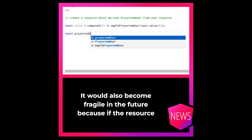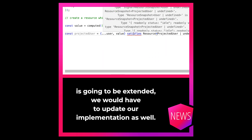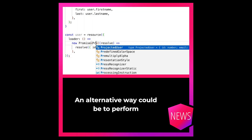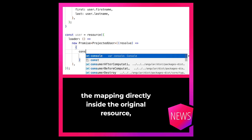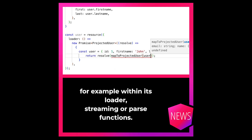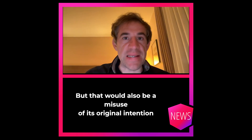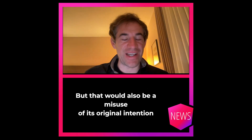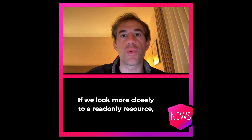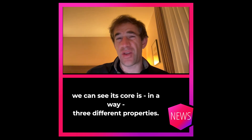It would also become fragile in the future because if the resource is going to be extended we would have to update our implementation as well. An alternative way could be to perform the mapping directly inside the original resource — for example within its loader, streaming, or parse functions. But that would also be a misuse of its original intention and would also lose the original value.